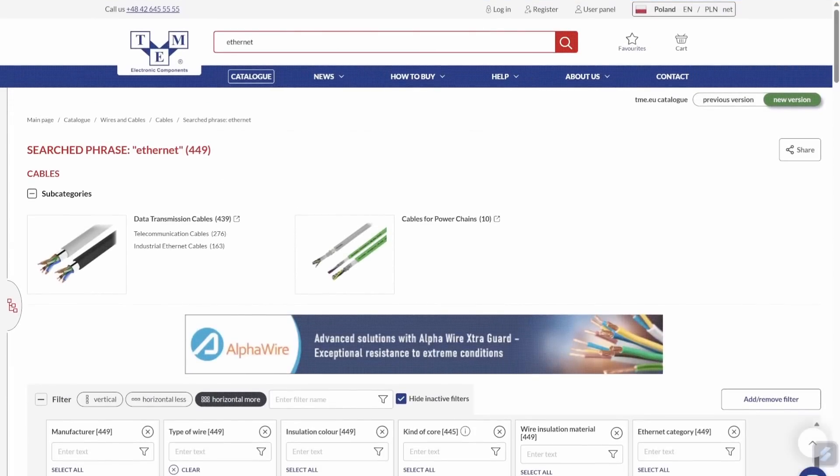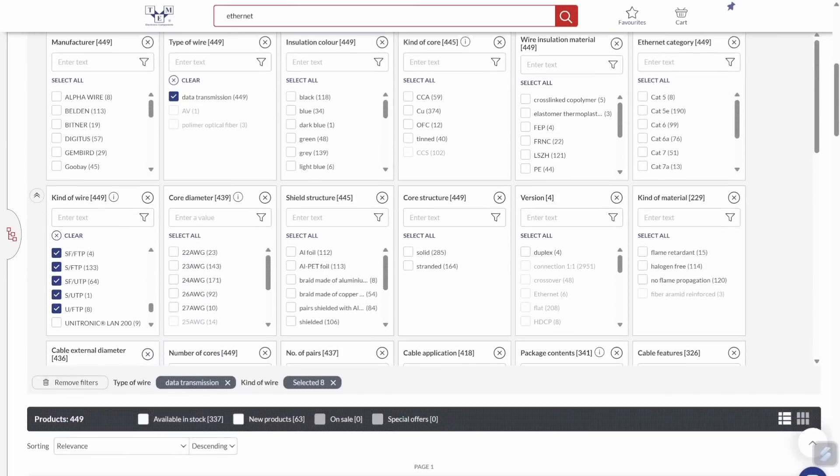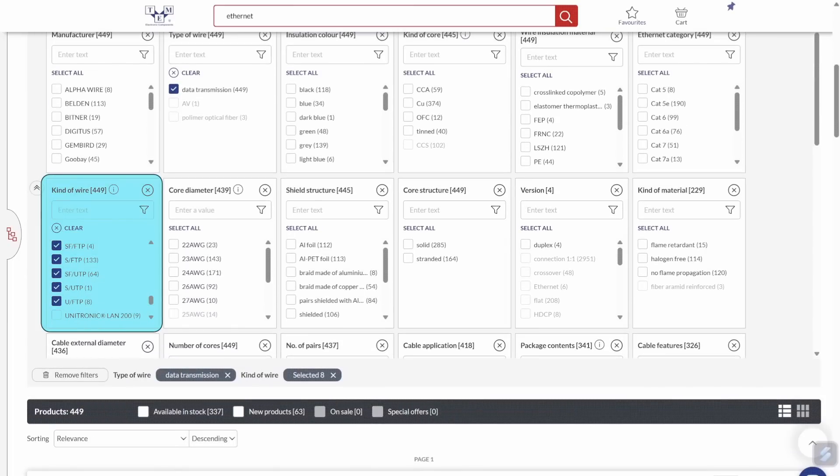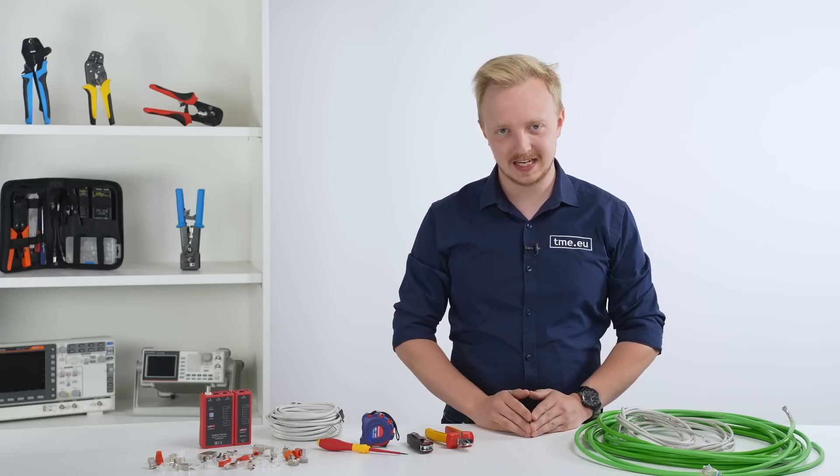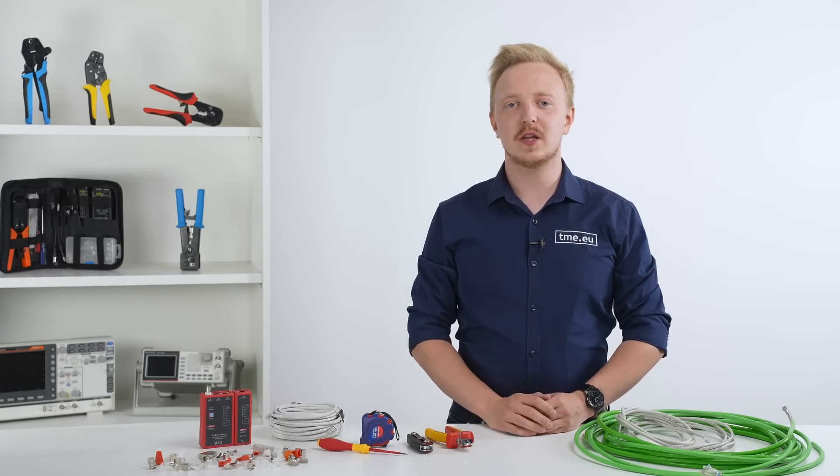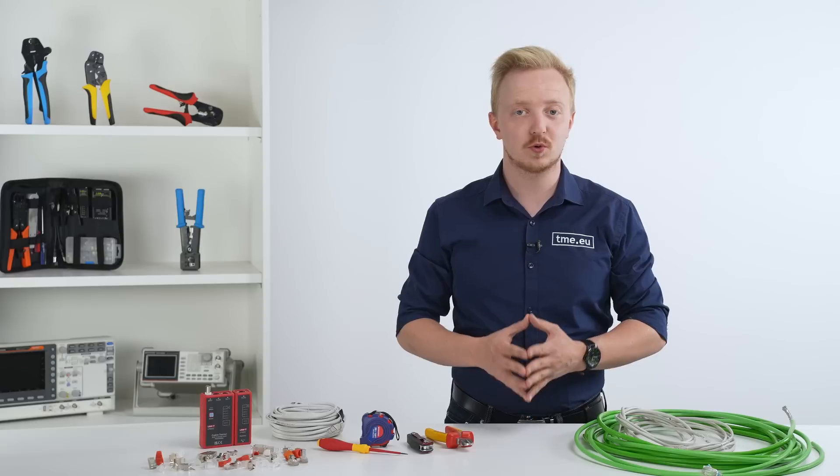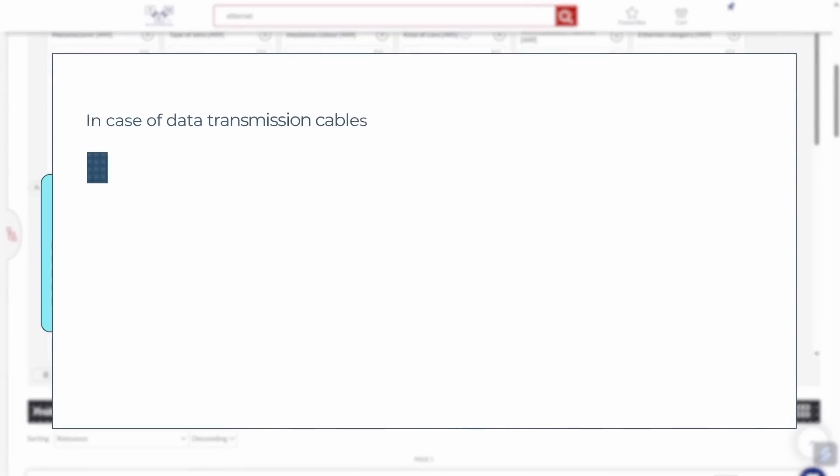If we go to our website and search for Ethernet cables, we'll notice that one of the specifications is kind of wire. In other words, what type of shielding it has. This isolation is one of the elements that make it possible to transmit at such high speeds.